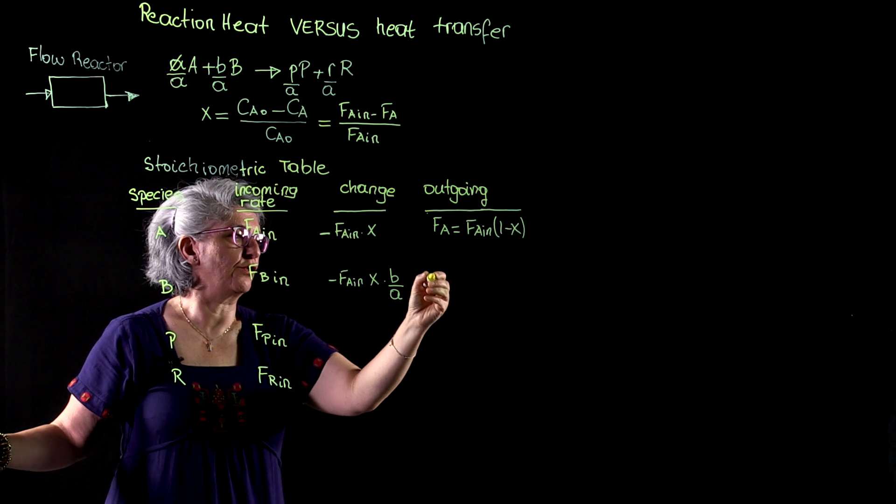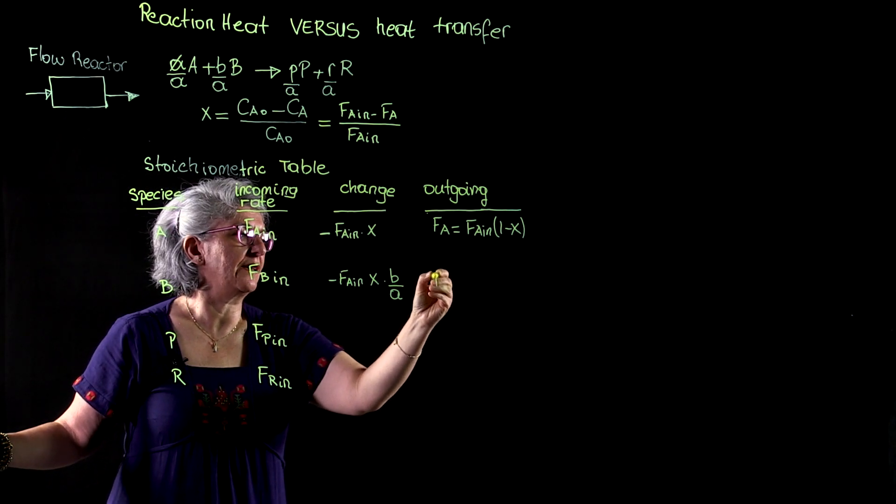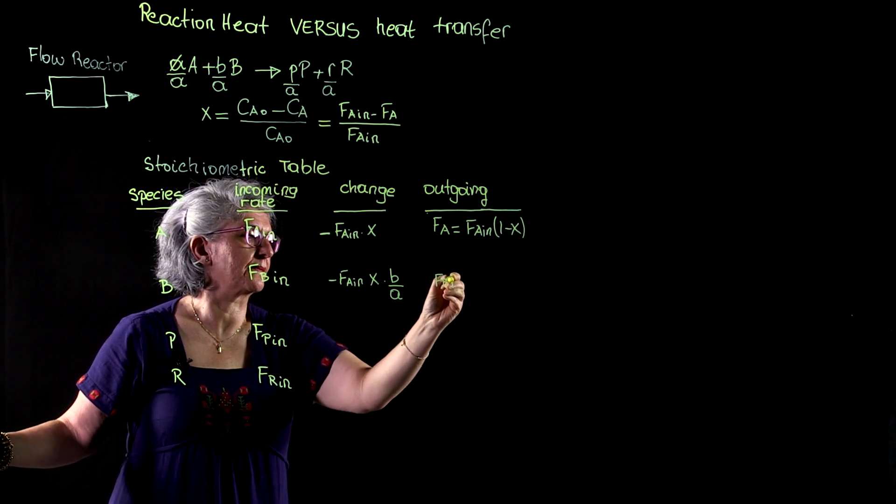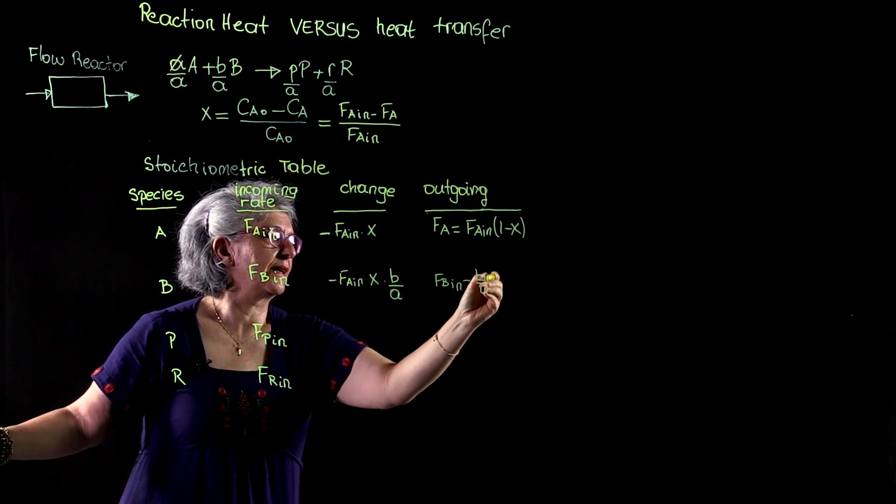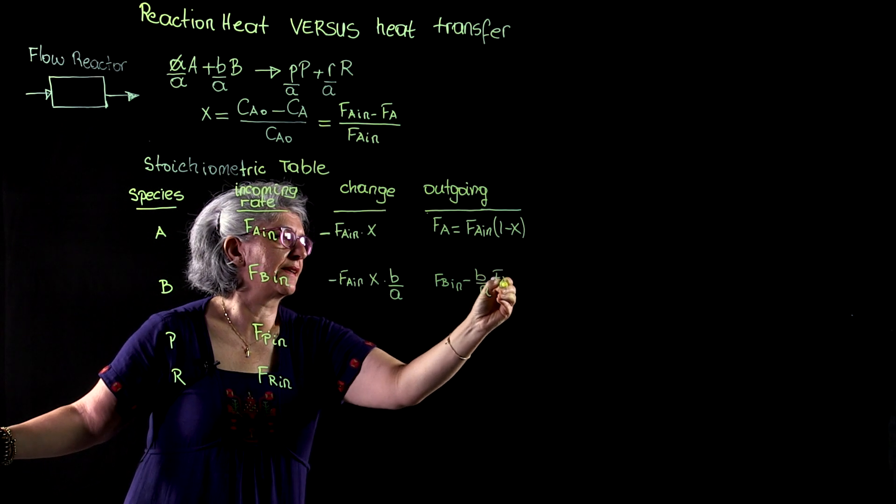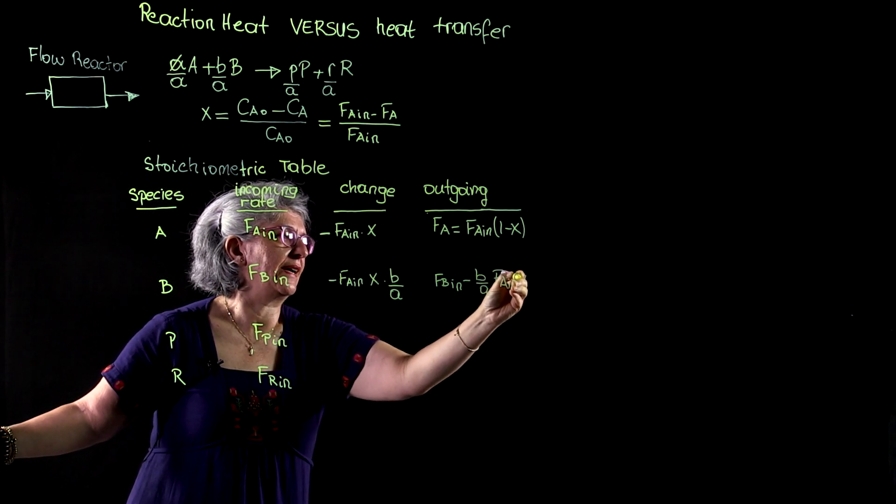So this is going to be FB in minus B over A times FA in times X.